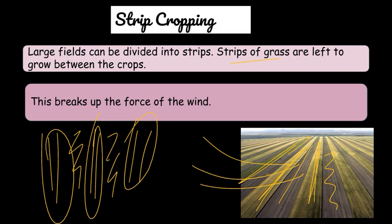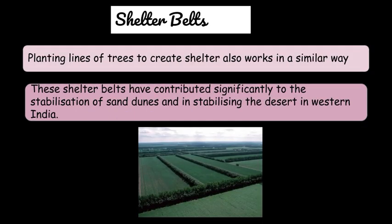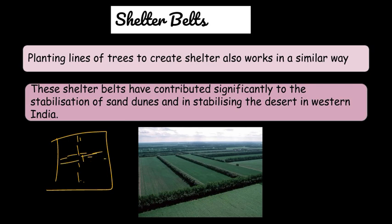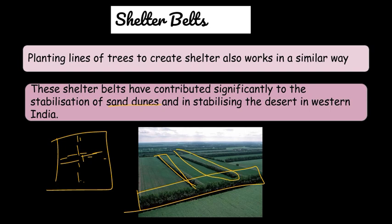Next is shelter belts. This is an effective but time-taking method. In fields, small trees are planted to create a little force or barrier against wind. Shelter belts of trees also help stabilize sand dunes in desert areas. With this, we know the methods of soil conservation.